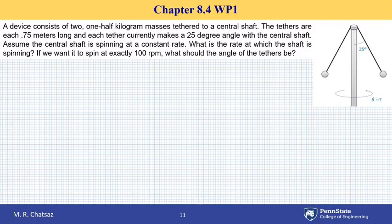Let's look at an example in cylindrical coordinate system r, theta, z in three dimensions. Here we have a device that has two one-half kilogram masses tethered to a central shaft. Each cord makes an angle of 25 degrees with the central shaft.